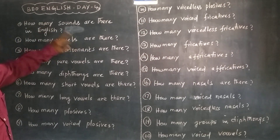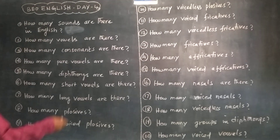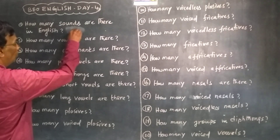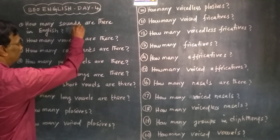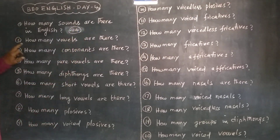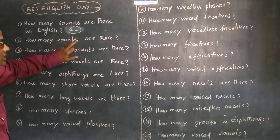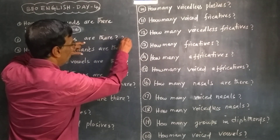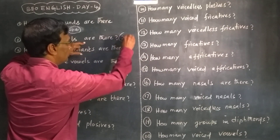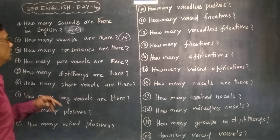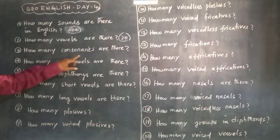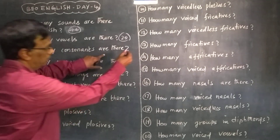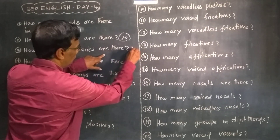How many sounds are there in English? 44. How many vowels are there? There are 20 vowels. How many consonants are there in English? 24.